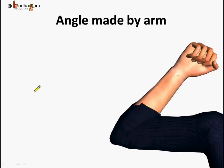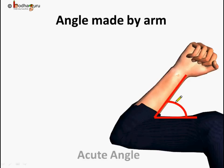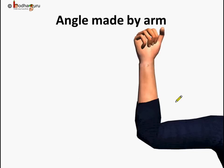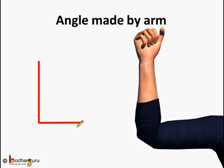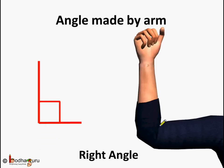Let's see the angle formed by the arm at the elbow joint. In this position, the angle made at the elbow joint is less than 90 degrees, so we can say it is an acute angle at the elbow joint. Now, coming to this position of the hands, the forearm is at 90 degrees with reference to the rest of the arm. We can say at the elbow joint, the angle made is equal to 90 degrees, which is a right angle.